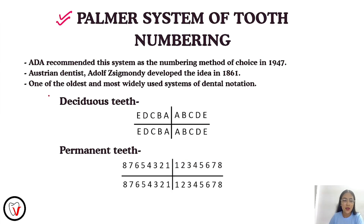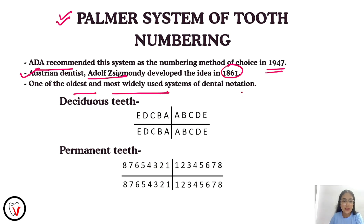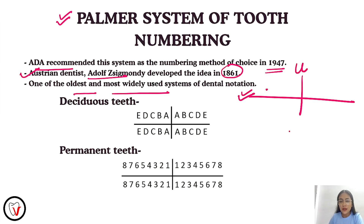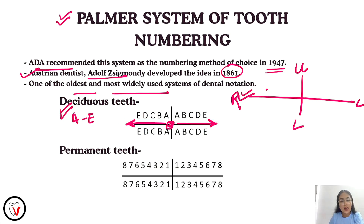Starting with the Palmer system of tooth numbering: the ADA recommended this system as the numbering method of choice in 1947. The Austrian dentist Adolf Zygmunti developed this idea in 1861. It is one of the oldest and most widely used systems for dental notation. For any numbering system, the arches are divided into four quadrants — the upper, the lower, the right, and the left. For deciduous dentition, we use alphabets A to E, starting from the midline towards the posterior teeth. For permanent teeth, we use numbers 1 to 8, starting from the midline towards the posterior teeth.